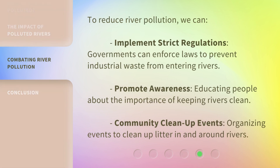To reduce river pollution, we can implement strict regulations — governments can enforce laws to prevent industrial waste from entering rivers. Promote awareness by educating people about the importance of keeping rivers clean. And organize community cleanup events to clean up litter in and around rivers.